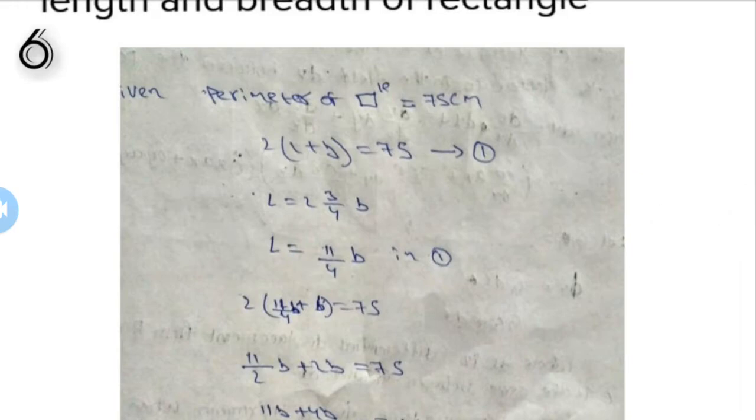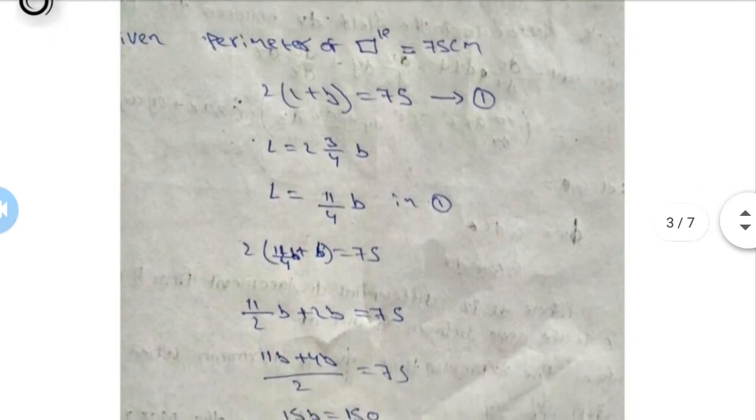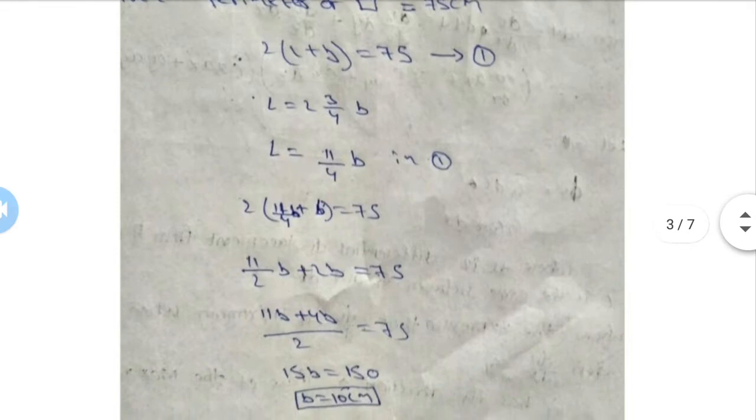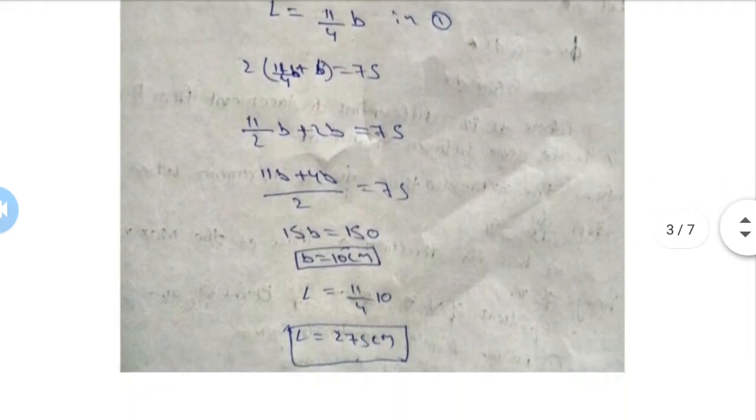We will put the value in the formula. L equals 11/4b, so it becomes 2 times 11/4b plus 2b equals 75. We take LCM and solve the equation, so at last we will get 15b equals 150, so b equals 10 centimeters. The length is 11/4 times 10, so we get 27.5 centimeters, and this is our answer.